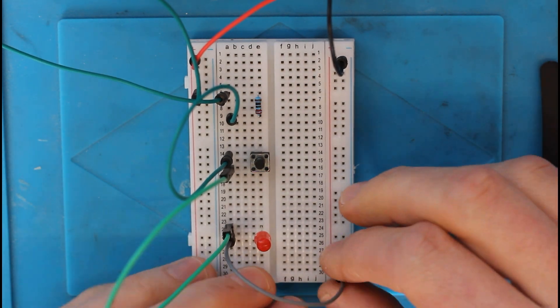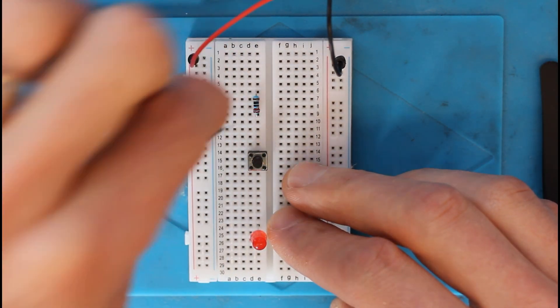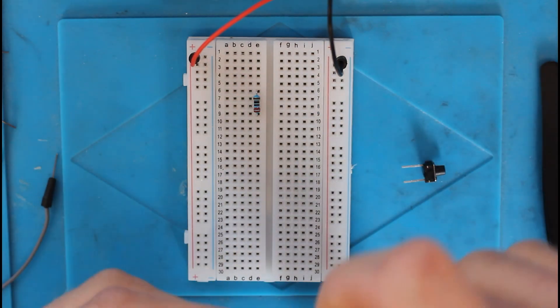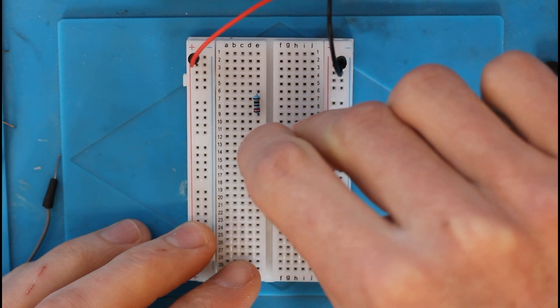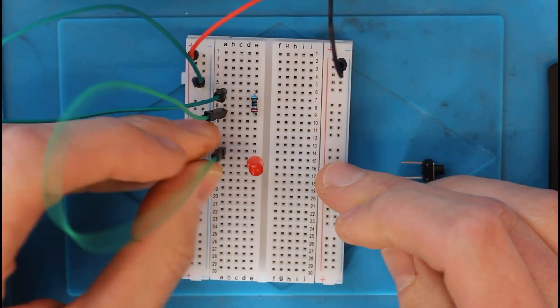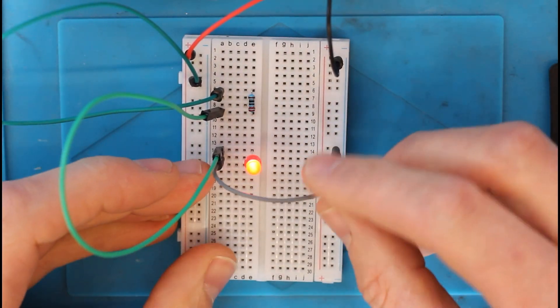First, let's strip everything off the breadboard until we're back to that single 220 ohm resistor. Then let's solve a piece of the puzzle, the scenario where the light bulb is normally on. For this part, I don't even need the button. I just need to connect my power through the resistor to the LED and back to ground. Good. That wasn't so hard.